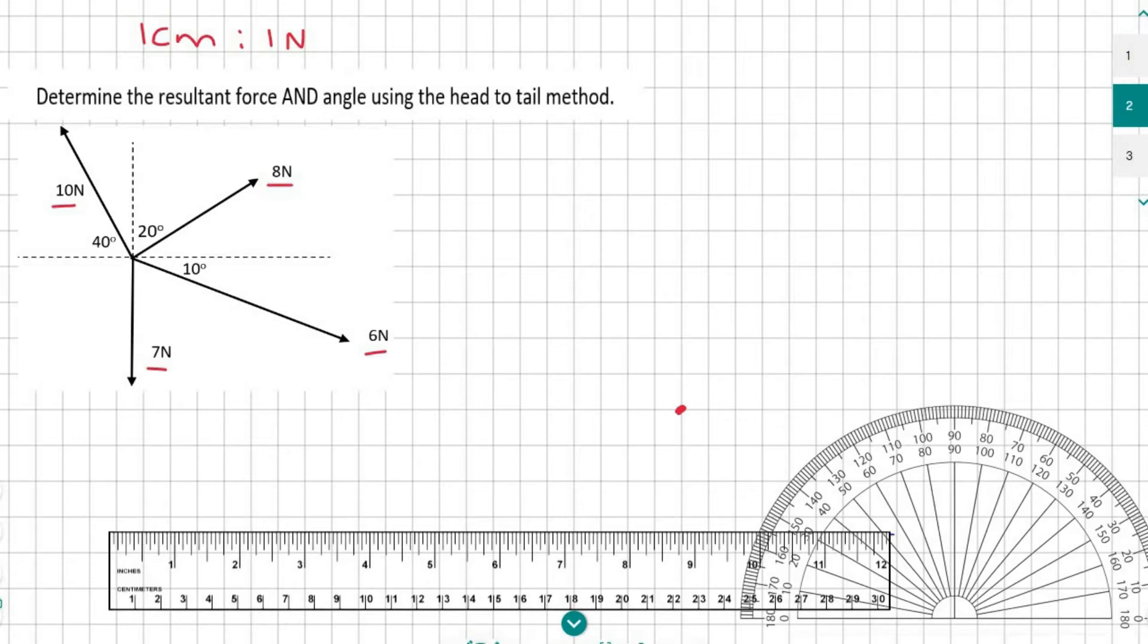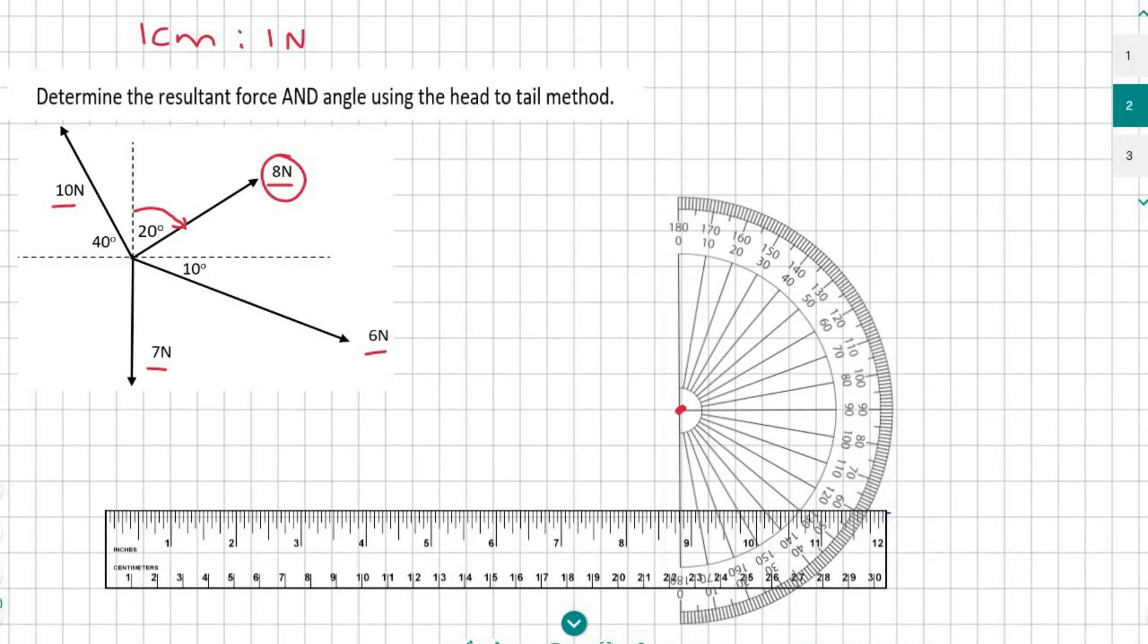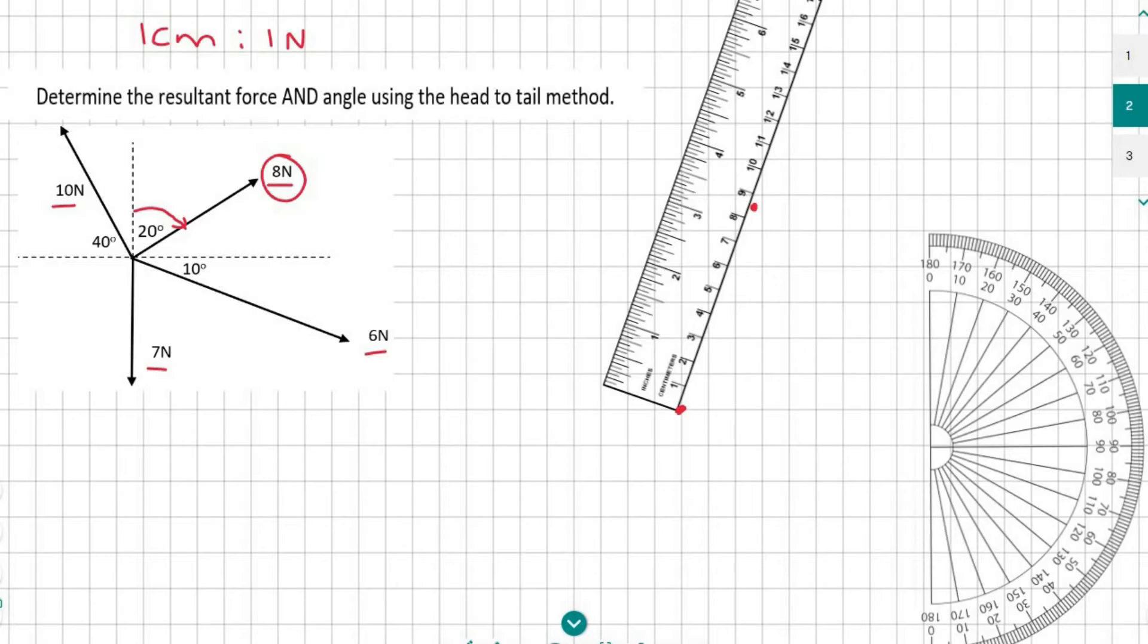I'm going to start with this 8 newton force. Now, you need to be careful. This 20 degrees is measured from this line over here. So I would place my protractor like that, and then you would measure 20 degrees going down, which gives you a point there. Then you would draw an 8 centimeter long line. There you can see I've drawn my line.